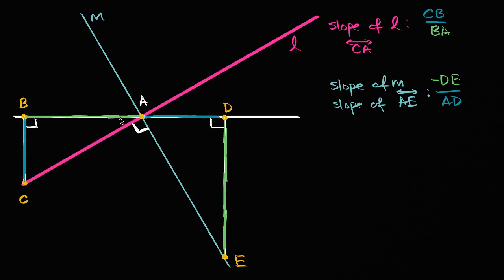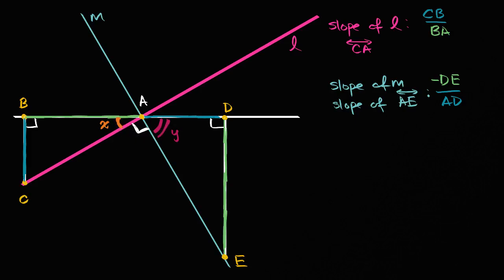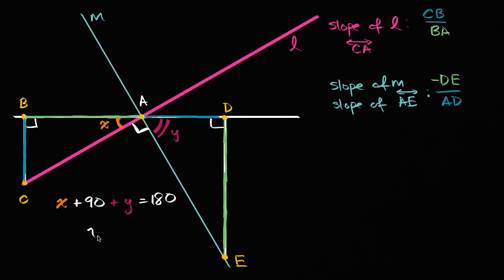Let's say this angle right over here has measure X, and this angle right over here has measure Y. We know X plus Y plus 90 is equal to 180, because together they are supplementary. So X plus 90 plus Y equals 180 degrees. Subtracting 90 from both sides, X plus Y equals 90 degrees. These are algebraically equivalent statements.